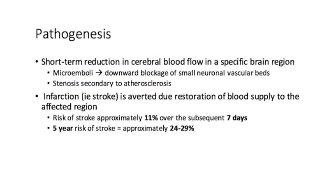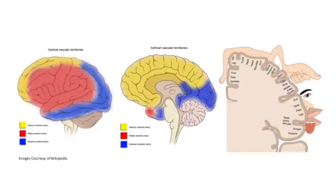Infarction is averted — so stroke is averted — because blood flow to the area is restored through autoregulatory mechanisms. However, these patients are at an increased risk of developing strokes: 11% over the subsequent seven days, or a total five-year risk of 24 to 29%. It's also important to be familiar with the blood flow of the regions of the brain.